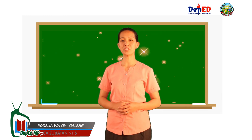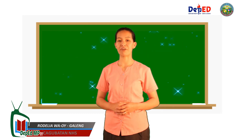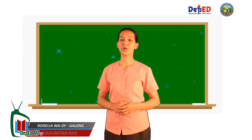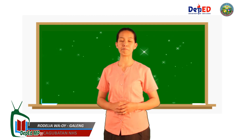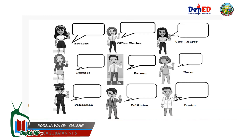Below are pictures of different people with different professions or work. Your task is to give each profession a dialogue about the topic and integrate their talk about human impact on the environment. The professions include: Student, Office Worker, Vice Mayor, Teacher, Farmer, Nurse, Policeman, Politician, and Doctor.